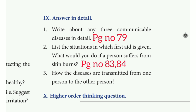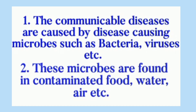3rd question: How are diseases transmitted from one person to another? The answer is: communicable diseases are caused by disease-causing microbes such as bacteria, virus etc. These microbes are found in contaminated food, water, air etc. This video is for your use. Thank you for watching. Subscribe to our channel for more videos.